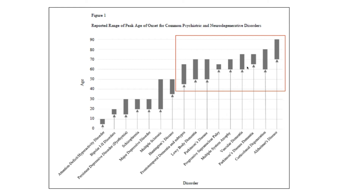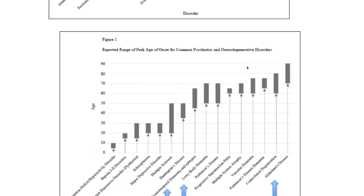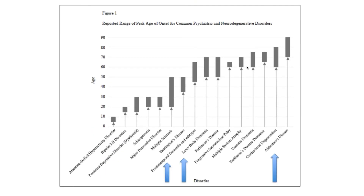I'd like to now highlight three diseases in particular: FTD, Lewy body dementia, and Alzheimer's disease. From this graph, Alzheimer's disease onset is usually in the eighth and ninth decade of life, FTD symptoms commonly present in the sixth decade of life, and Lewy body dementia usually presents in the late 50s and 60s. This is an important differentiating factor.